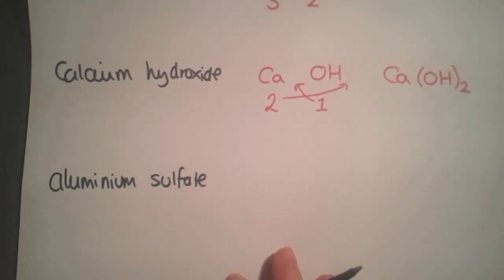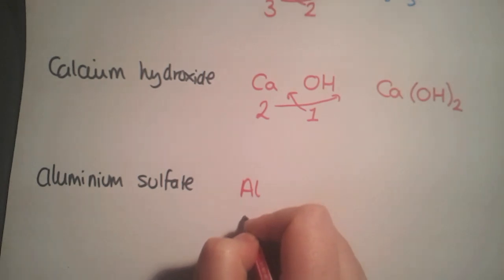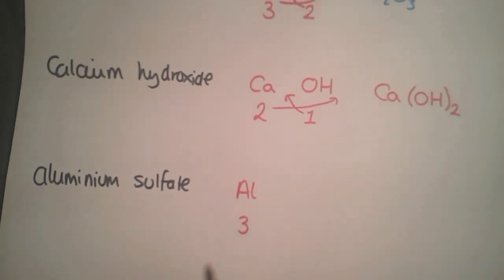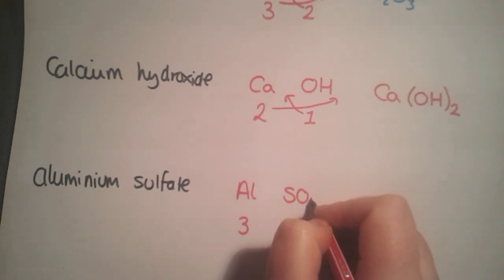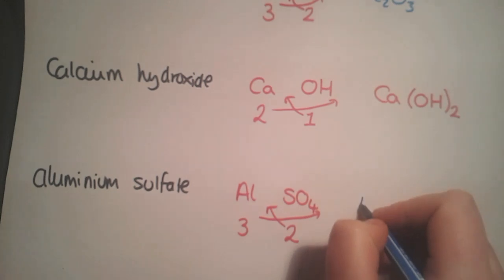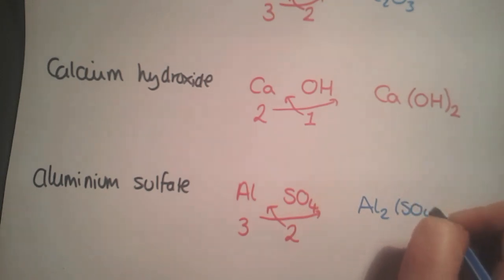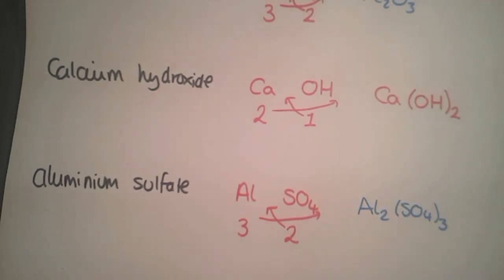Our final example is aluminium sulfate. Aluminium is in group three, sulfate is in the two-minus column in your table: SO4 with valency two. Swap these over and remember to put brackets around the group ion. Without brackets you'd have SO43, which doesn't happen. So remember brackets to show that's a complete unit together: Al2(SO4)3.